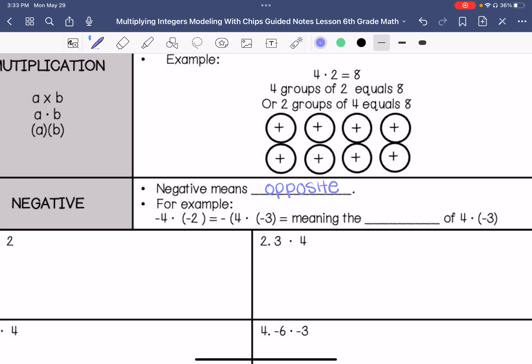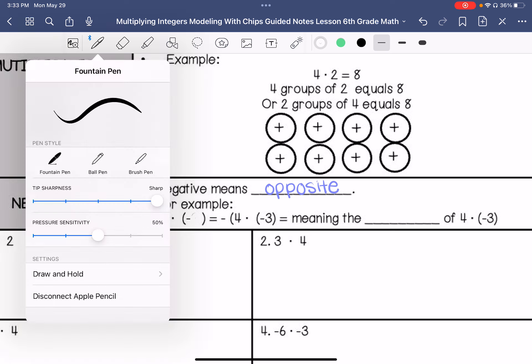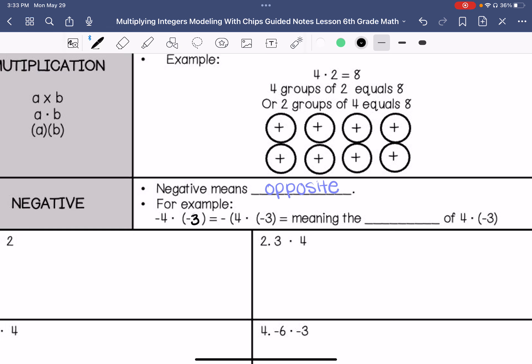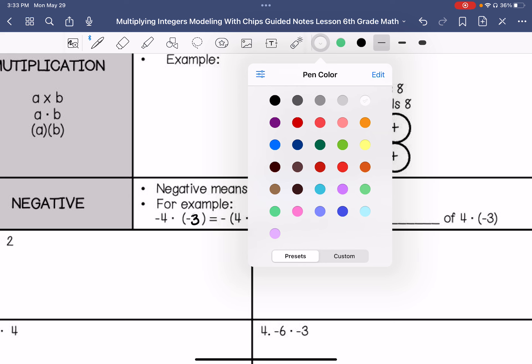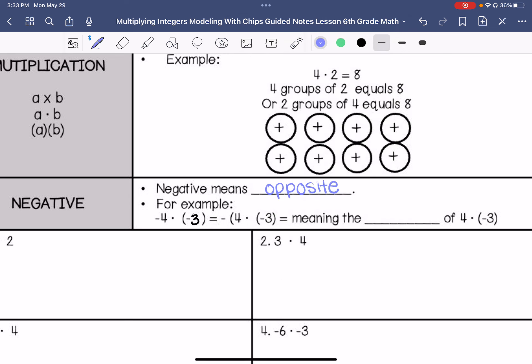So if we have negative 4 times negative 3, this is a typo, let me fix it real quick. Negative 4 times negative 3 is basically the opposite of positive 4 times negative 3. So that's if we have 2 negatives in our multiplication problem, we need to think of it that way.